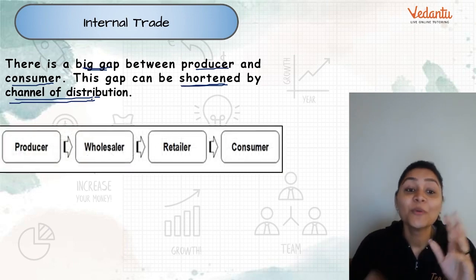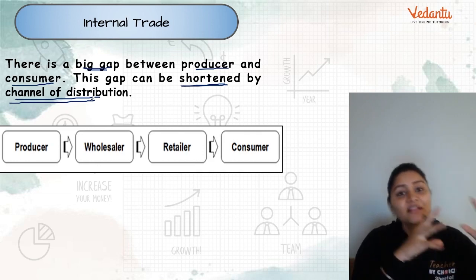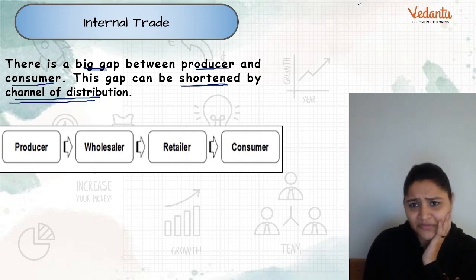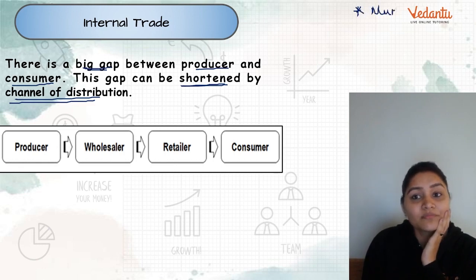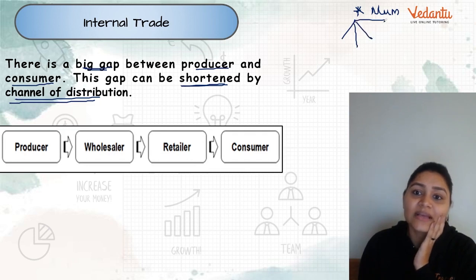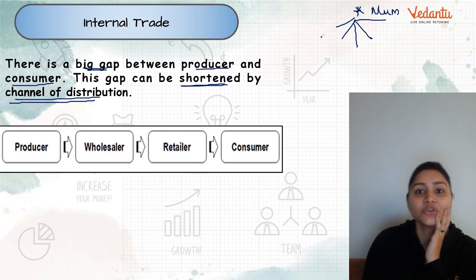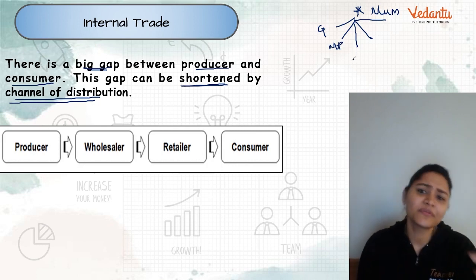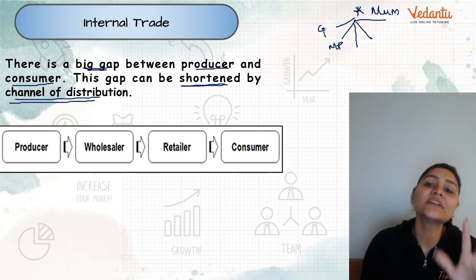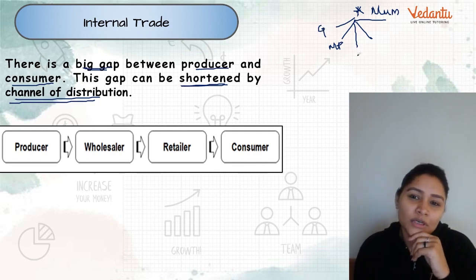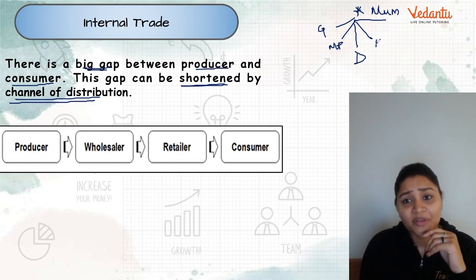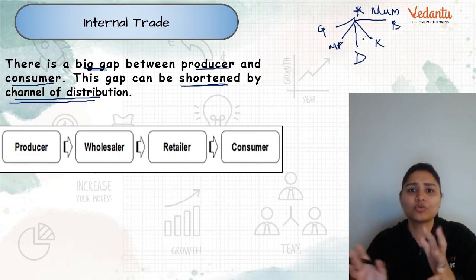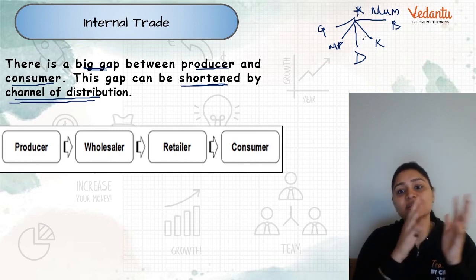What is this channel of distribution? The producer manufactures goods and sells them to wholesalers. The wholesalers are at different locations. For example, if a manufacturer is in Mumbai, that manufacturer may have wholesalers in Gujarat, Madhya Pradesh, Delhi, Kashmir, Bangalore — different states and cities. The wholesalers buy in bulk and keep the goods with them, reaching out across different locations on behalf of the manufacturer.